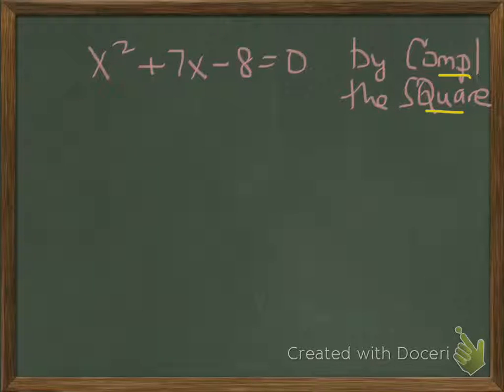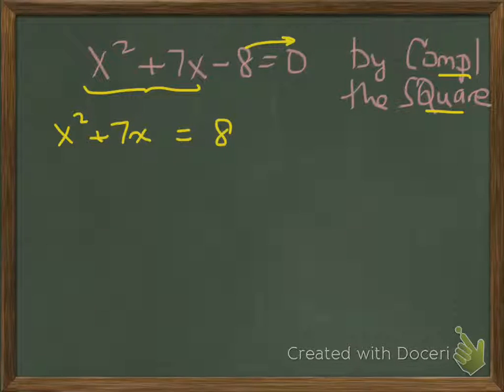In order to complete the square, we want to make sure that we have a perfect square. So we're going to take a look at the first two terms, x squared plus 7x, and we'll move the -8 to the other side by adding, so we'll have equals 8. Now we want to have a perfect square on the left side of the equation.